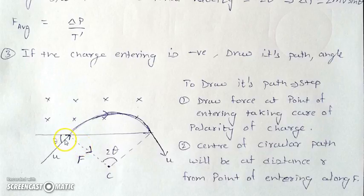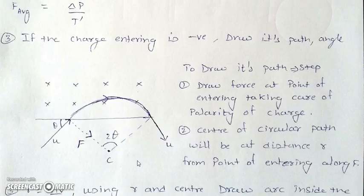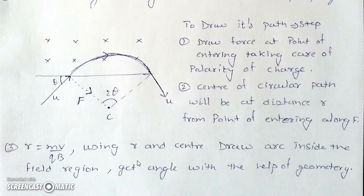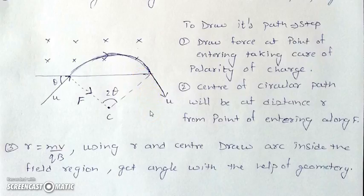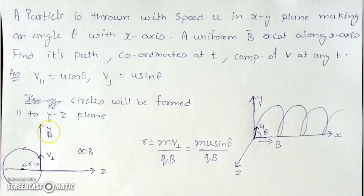This is an important point: the velocity is in this direction, V×B is upward, but the force will be in the opposite direction because the charge is negative. To draw the path, find the center at distance R in the direction of this reversed force, then draw the arc inside the magnetic field region. With simple geometry, we get this angle as 2θ — this angle is 90°, making the others 90° − θ each — and we can solve for the time spent, change in momentum, and angle covered.